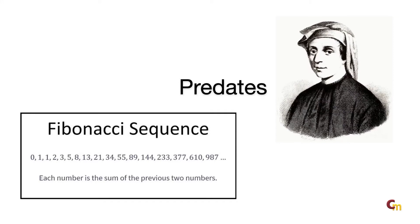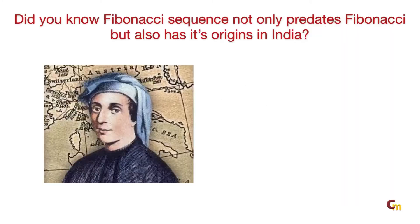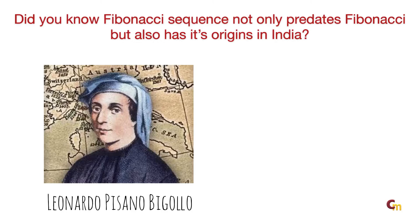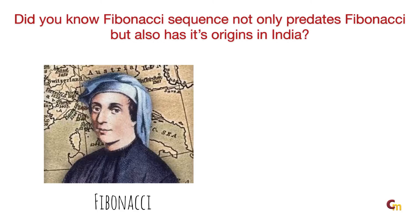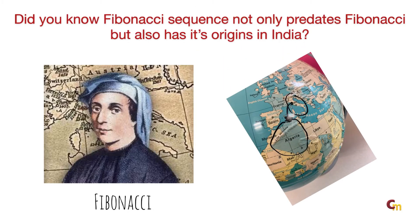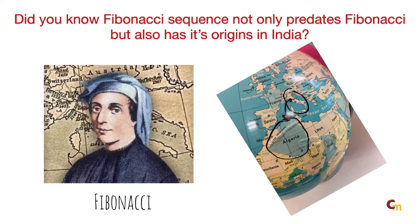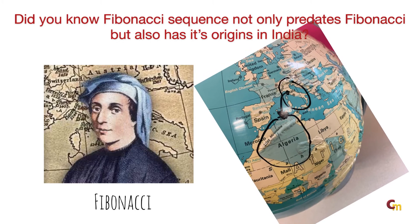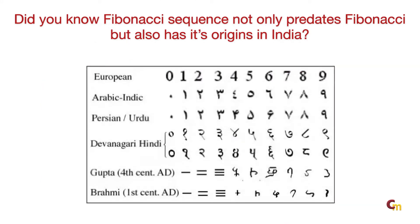Born in 1170 AD in Pisa, Donato Pisano Vigolo, also nicknamed Fibonacci since he was the son of Bonacci, traveled with his father who was an Italian merchant to various Mediterranean countries. But it was in Buteya — modern-day Algeria — that he got educated and learned about the Hindu-Arabic numeral system.